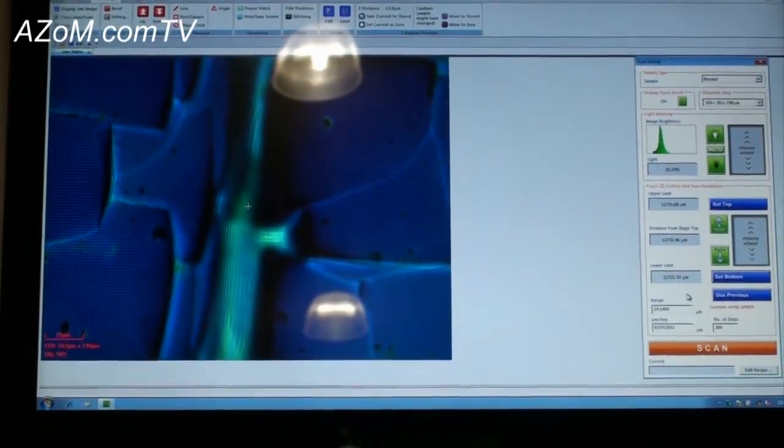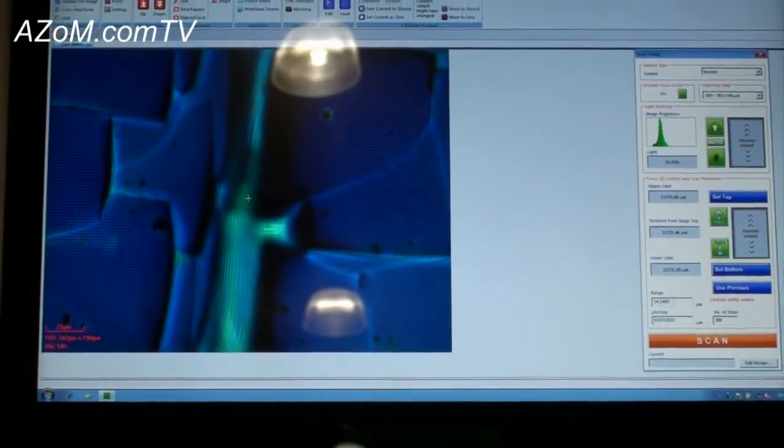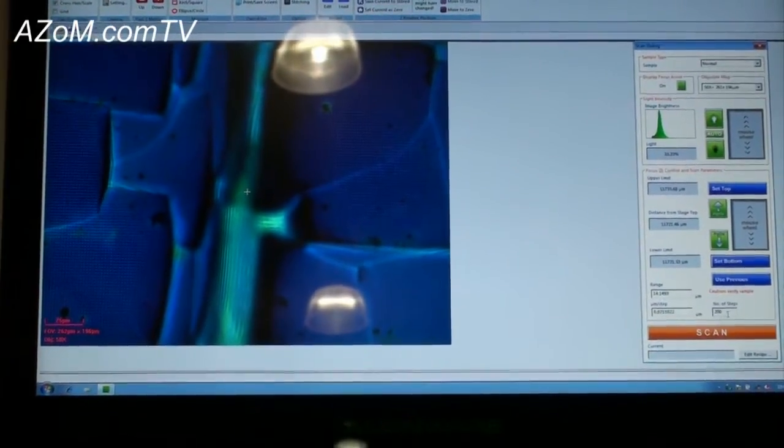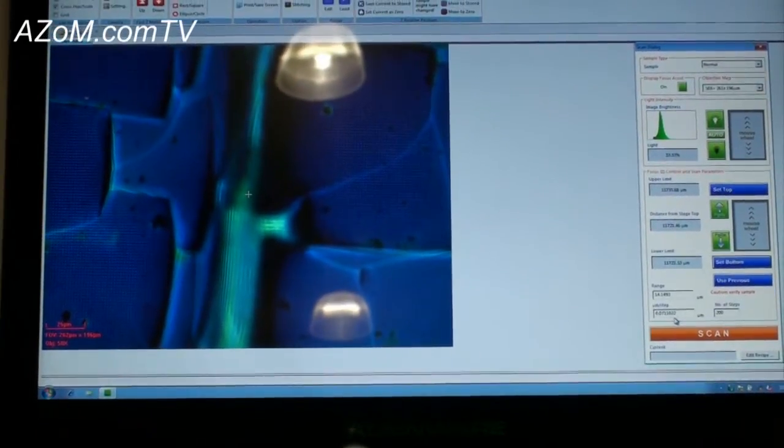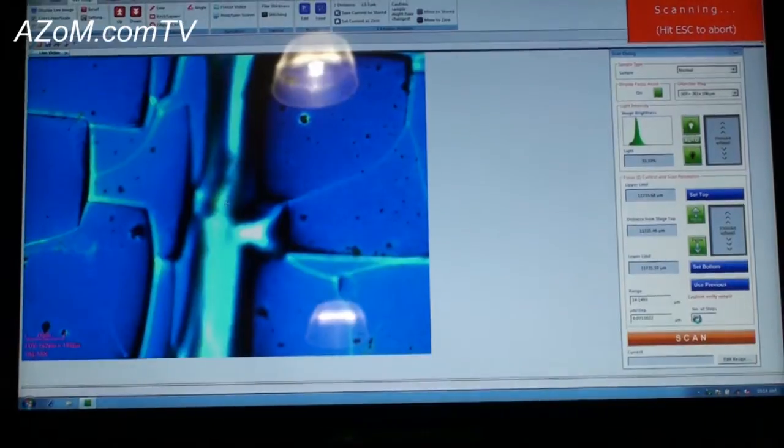Maybe increase this a bit. So we're going to scan a range of roughly 14 microns. And then based on our 200 slices that I currently have set, our resolution is going to be 70 nanometers per step. What I do is simply hit scan.